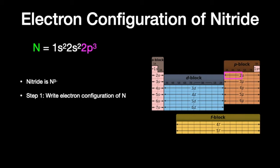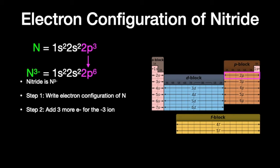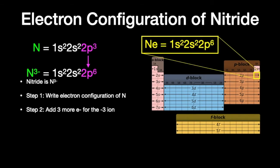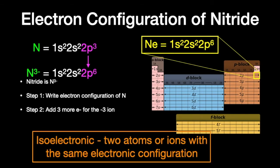Now we need to add three electrons for the negative 3 ion, and we do that in the last shell. So the 2p3 becomes 2p6. Interestingly enough, neon also has that exact same electron configuration, so we say that neon is isoelectronic with nitride.